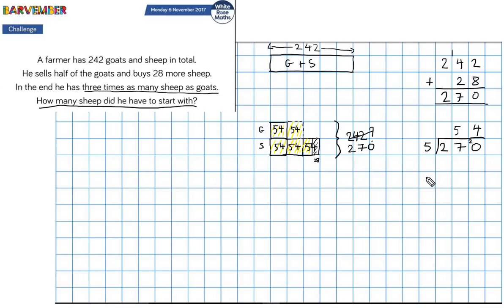So 54 times 3 gives me 162. So all of these 3 equal 162, but I have to take away the 28.